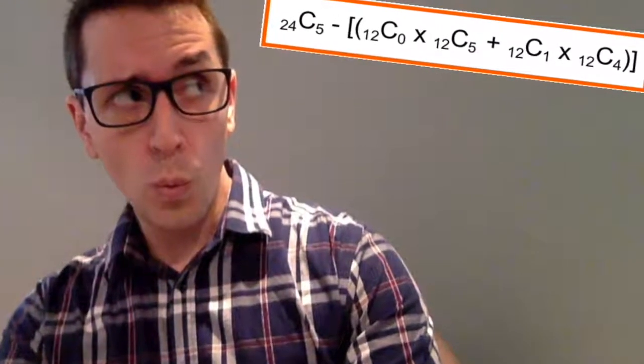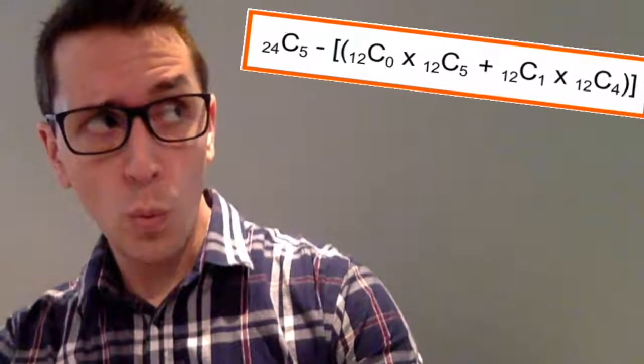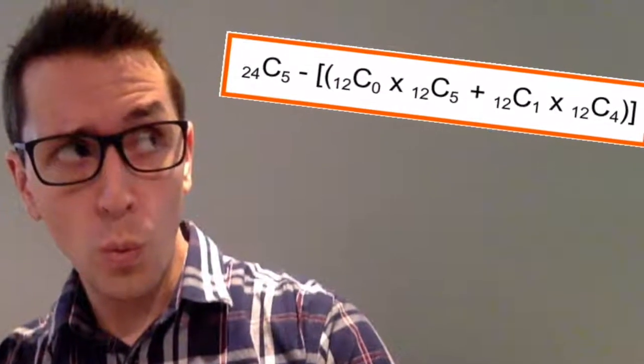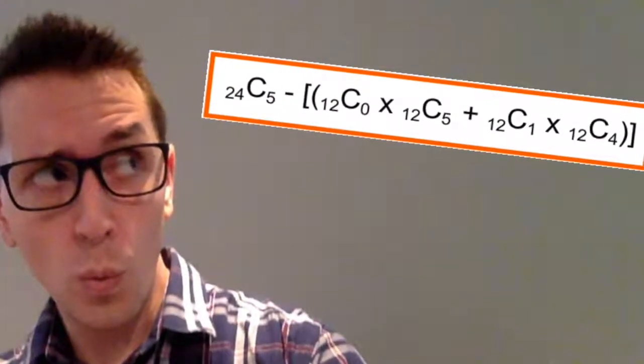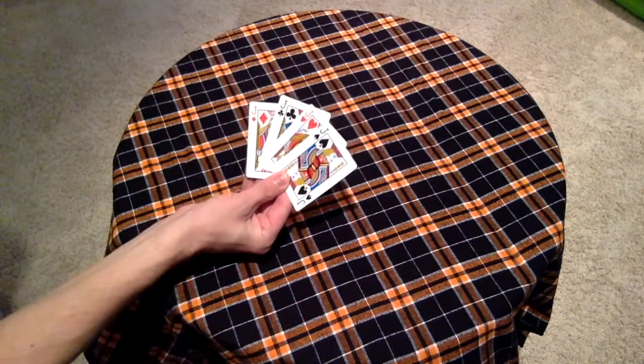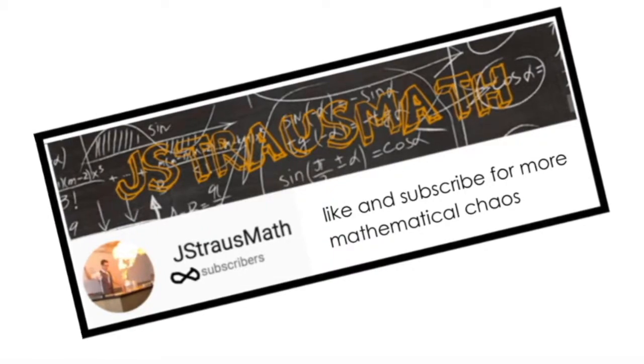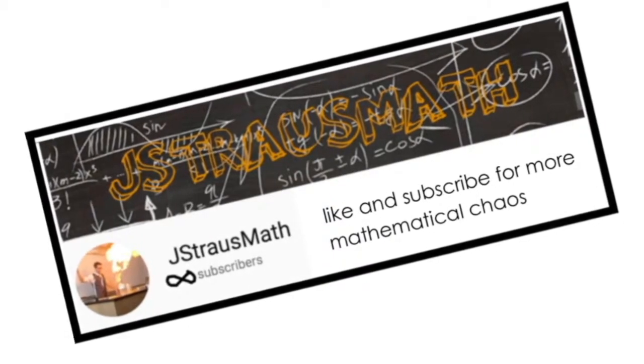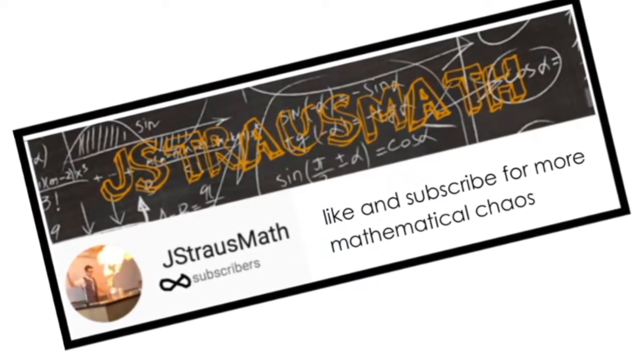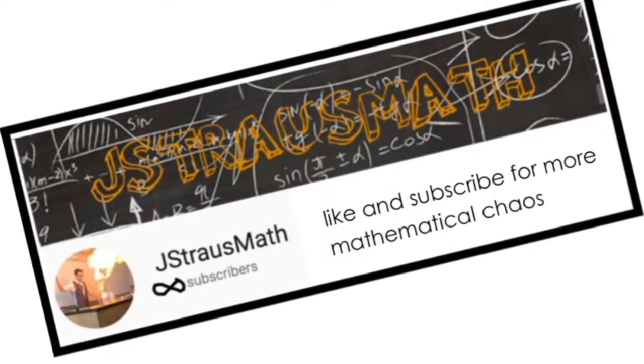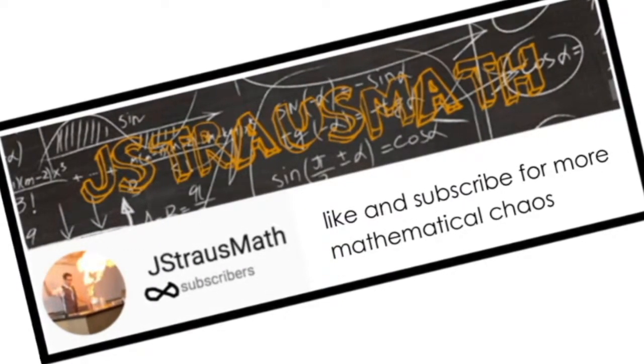So as you can see these problems can get pretty complex. You can definitely solve these problems without knowing how to play card games like euchre, but as you saw you do need a basic understanding of the number of cards in a deck, the number of cards in each suit, and the number of each type of card in the deck. With all of this information you should be able to solve pretty much any combination problem. If you found this video helpful in any way, like and subscribe for more mathematical chaos, and as usual, thanks for watching.